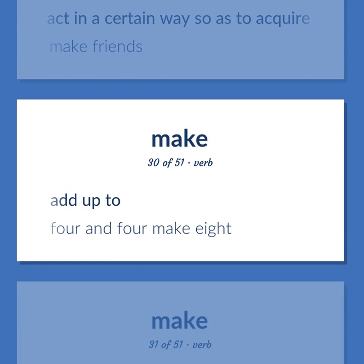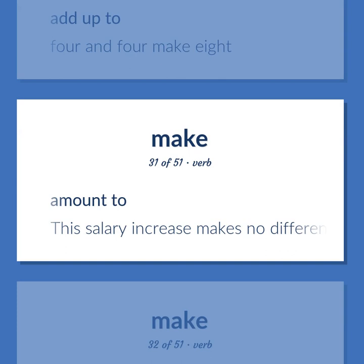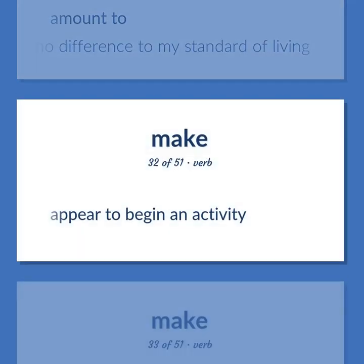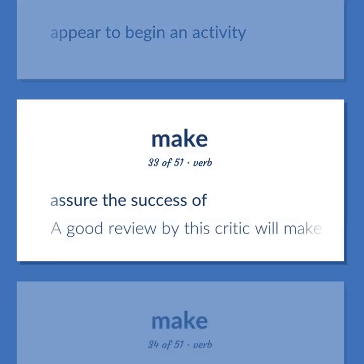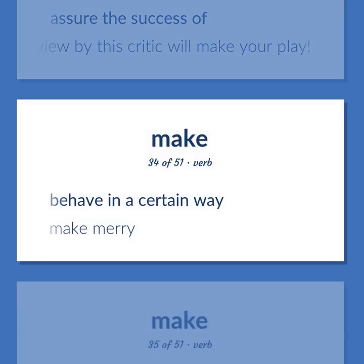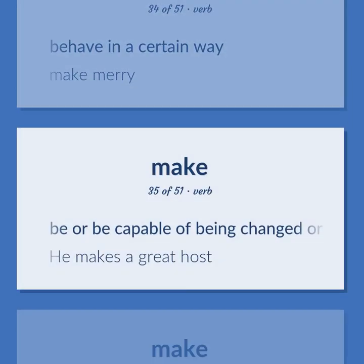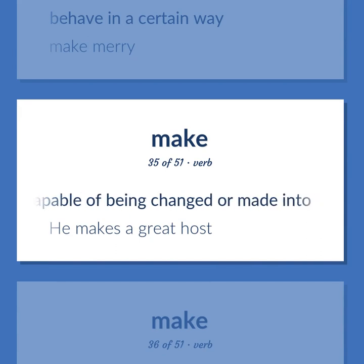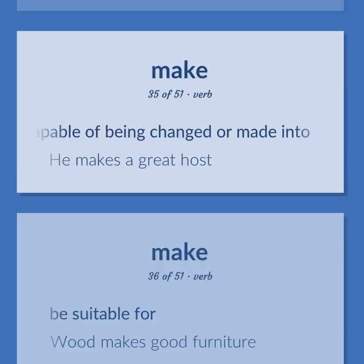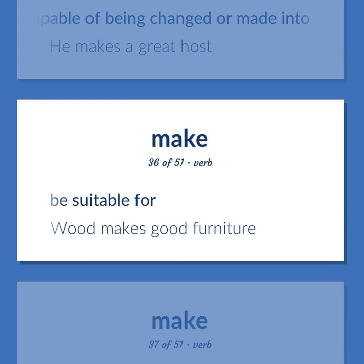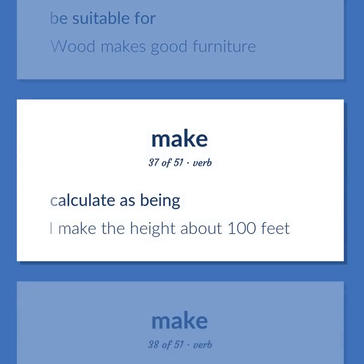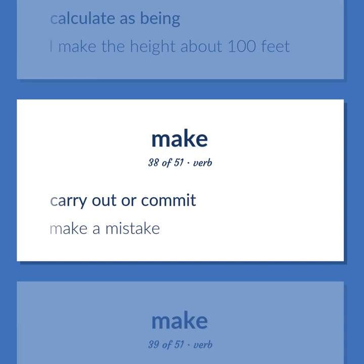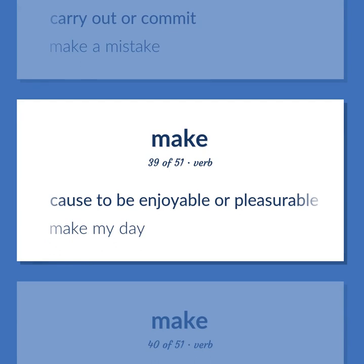Add up to. Four and four make eight. Amount to. This salary increase makes no difference to my standard of living. Appear to begin an activity. Assure the success of. A good review by this critic will make your play. Behave in a certain way; make merry. Be or be capable of being changed or made into. He makes a great host. Be suitable for. Wood makes good furniture. Calculate as being. I make the height about 100 feet. Carry out or commit. Make a mistake. Cause to be enjoyable or pleasurable. Make my day.